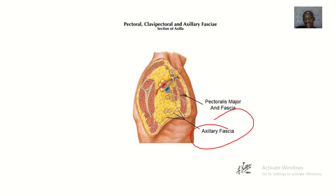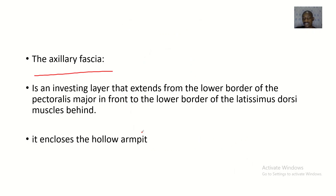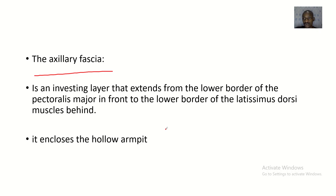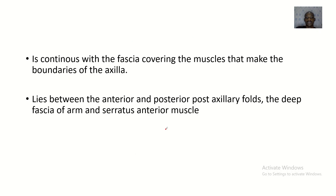You can see where it extends from the lower border of the pectoralis major in front. This is the axillary fascia — it extends from this lower border to the lower border of the latissimus dorsi. It is like the covering under the armpit, enclosing the hollow armpit.